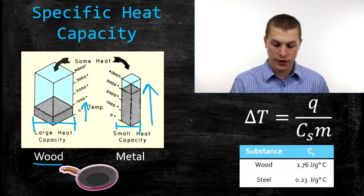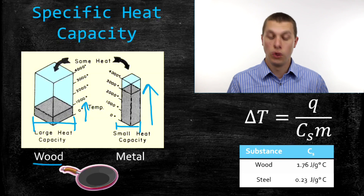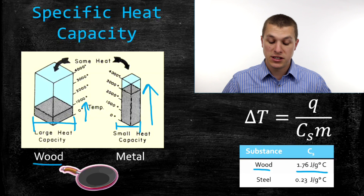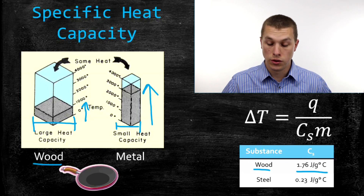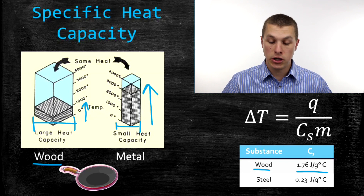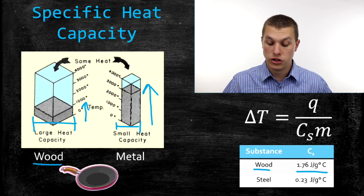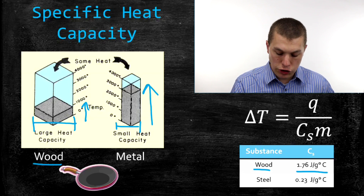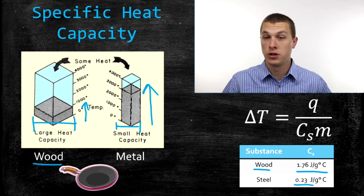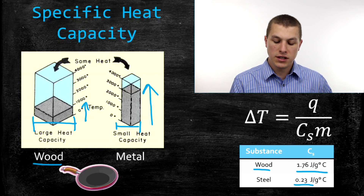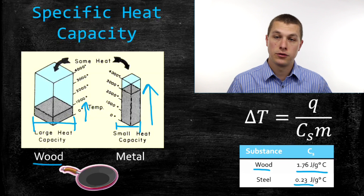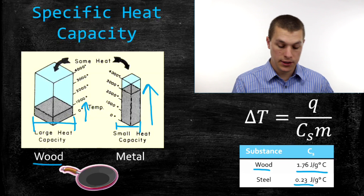We can see that also in the table. The heat capacity of wood is 1.76 joules per gram per degree Celsius. What that's telling you is: if you add 1.76 joules of heat to a gram of wood, it'll heat up 1 degree Celsius. On the other hand, it only takes 0.23 joules to heat up 1 gram of steel by 1 degree Celsius. So it takes much less energy to heat up steel than wood, and that's part of the reason the wood handle is cooler than the steel.